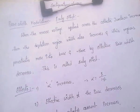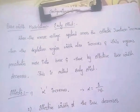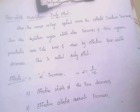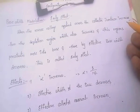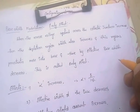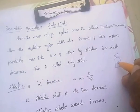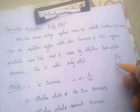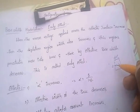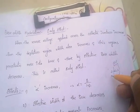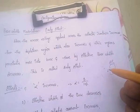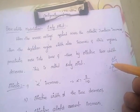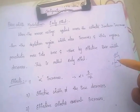Next is base width modulation or the early effect. When the reverse voltage applied across the collector junction increases, the depletion region width also increases and penetrates more into the base. This means the effective width of the base decreases — this is called the early effect.